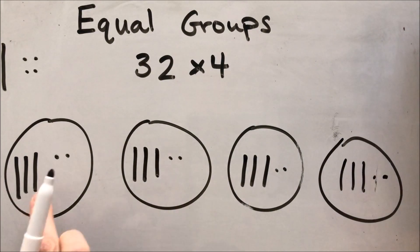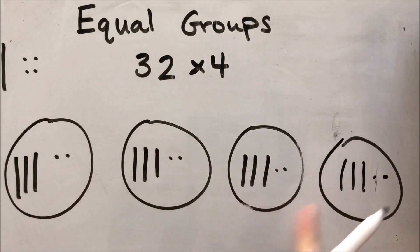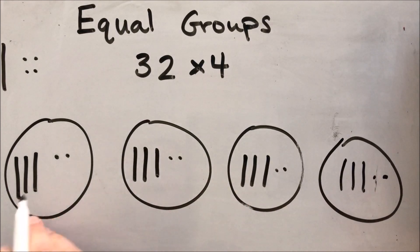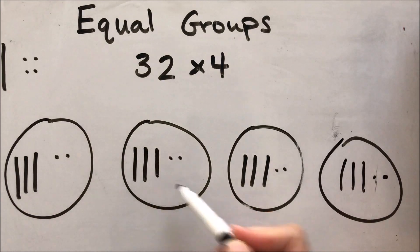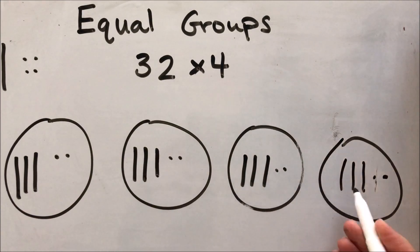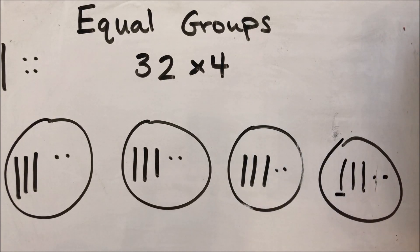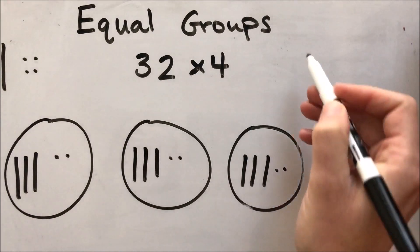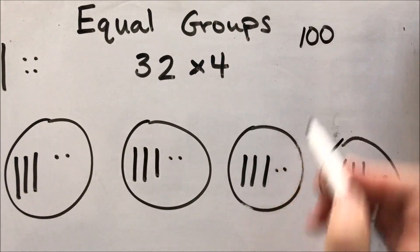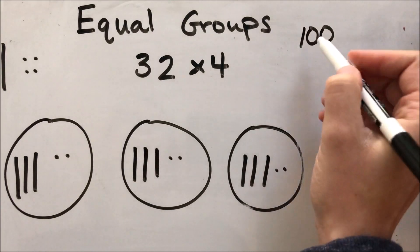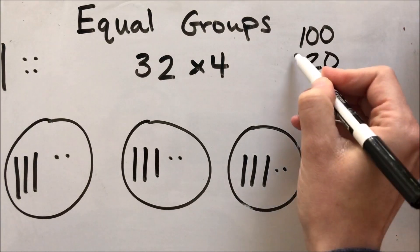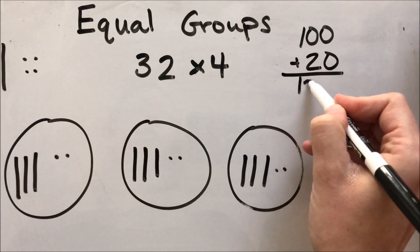Now that I have my equal number in each group, I'm going to count them up. These are tens blocks, so we need to count by ten: 10, 20, 30, 40, 50, 60, 70, 80, 90, 100. I'm going to underline that and jot down that I have 100 so far. Then I'm going to add on the rest of my tens blocks: 10, 20. So all together in tens I have 120.